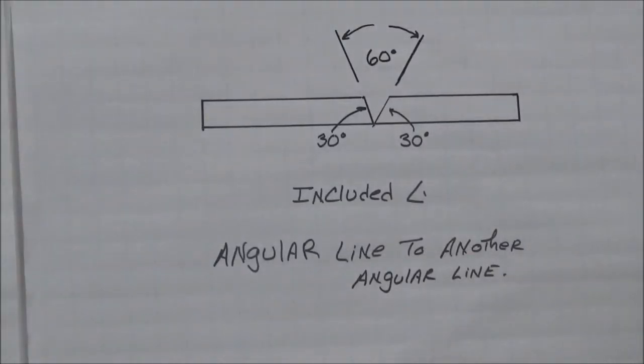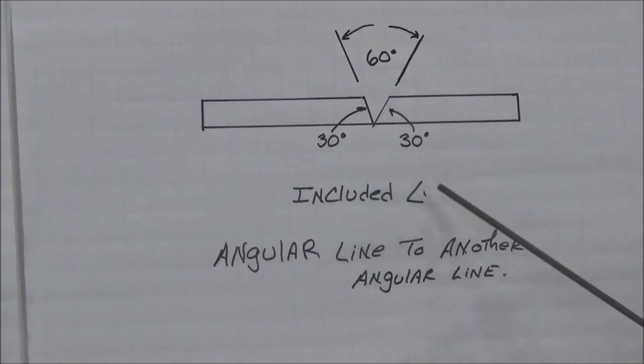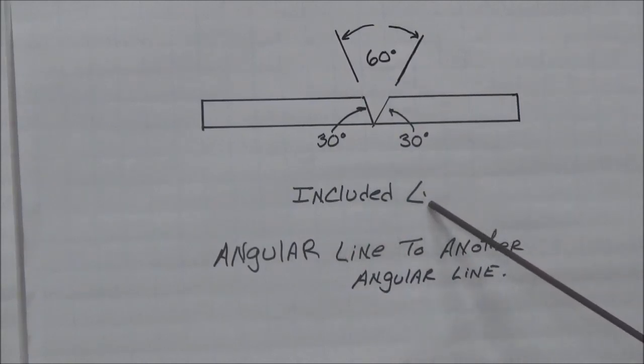Okay, so our last one we're going to talk about today is an included angle. If you happen to see this up here, and it says 60 degrees, it does not mean that you bevel this at 60 degrees either side. What it means is you bevel each side to 30 degrees for an included angle of 60 degrees. So, an included angle. Notice, once again, I use my little angle symbol. An angular line to another angular line. So, there we go, ladies and gentlemen. That wraps up our little lesson here on dimensions for this part of it, anyhow.